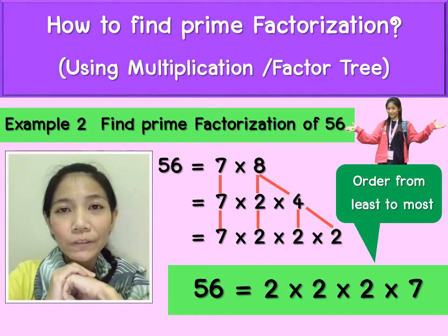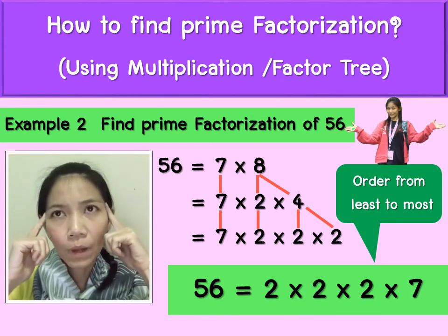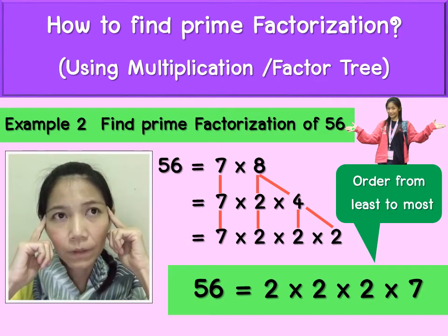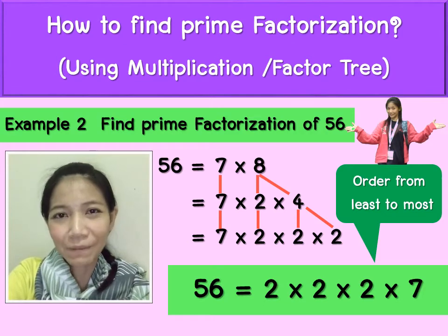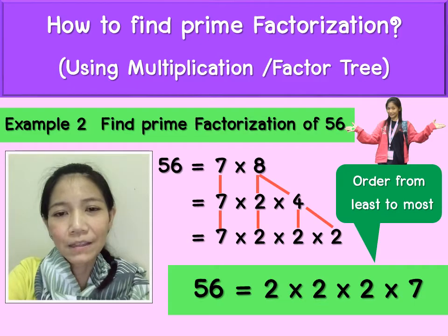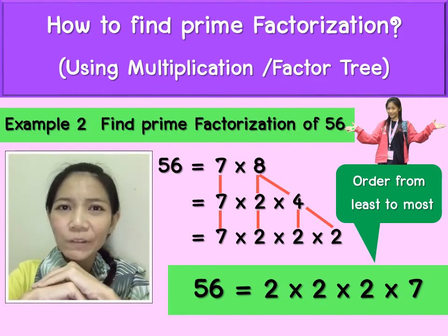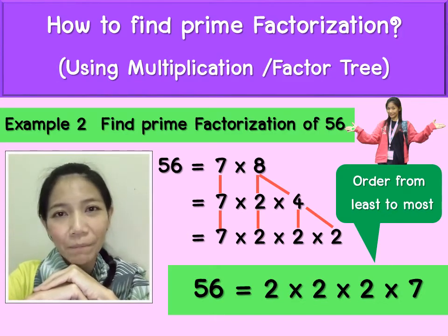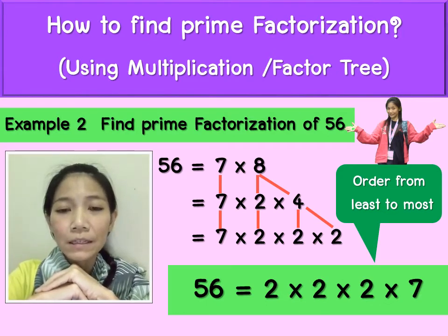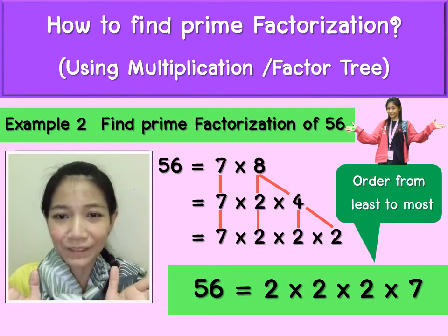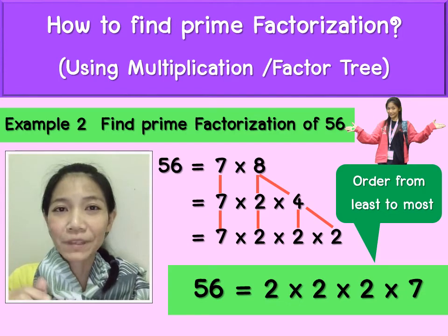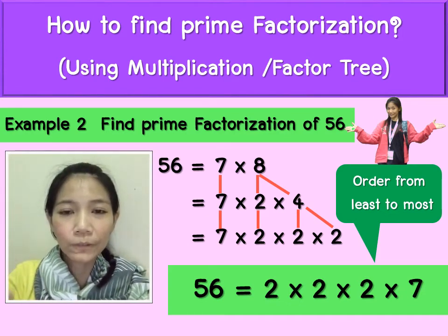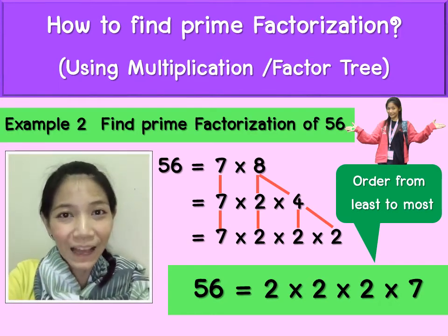Example 2: prime factorization of 56. What numbers can multiply to equal 56? 7 times 8 — but you can't stop because 8 is not a prime number. So you write 7 times 2 times 4 — still can't stop, 4 is not prime. Next: 7 times 2 times 2 times 2. Now you can stop because all numbers are prime. When you write the answer, order from least to greatest.